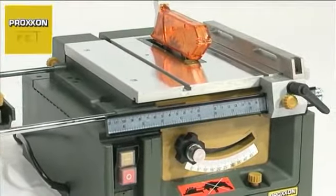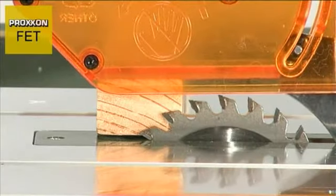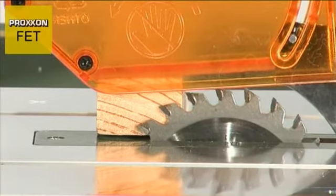A tungsten carbide blade is also used with this model. The height of the saw blade can be adjusted, and it can also be pivoted through 45 degrees.